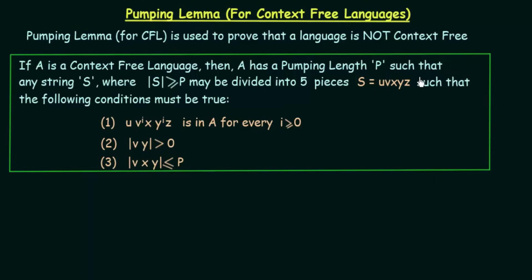It will have some Pumping Length P such that any string S from language A, where the length of S is greater than or equal to P, can be divided into 5 pieces: S equals U, V, X, Y, and Z. If you remember, when we studied Pumping Lemma for regular languages, we divided the string into 3 pieces. But in Pumping Lemma for context free languages, we divide the string into 5 pieces: U, V, X, Y, and Z, such that the following conditions must be true.